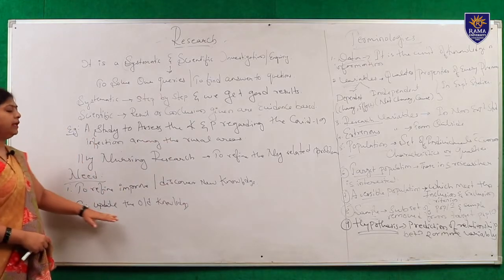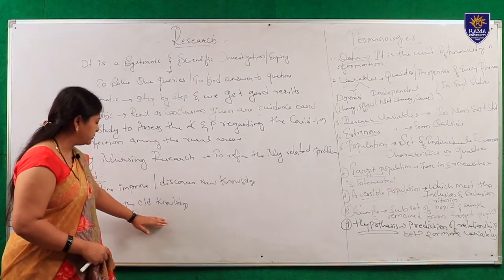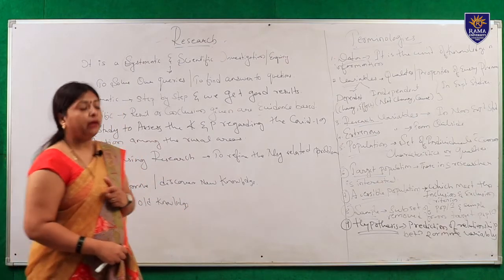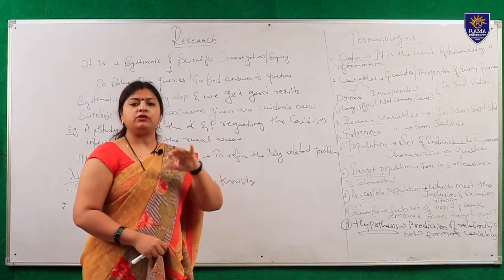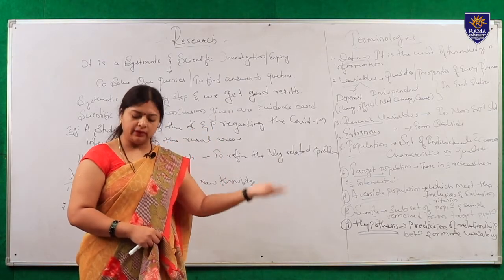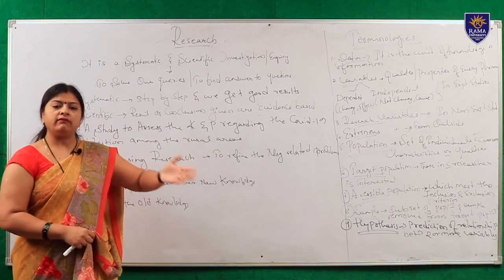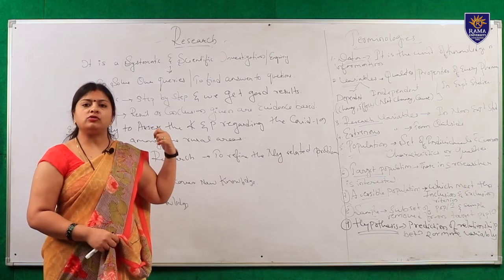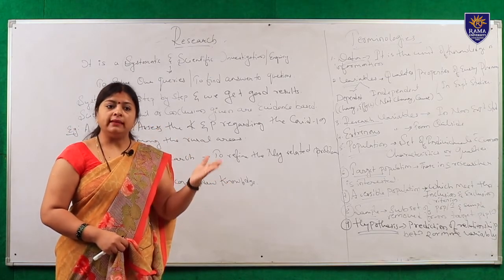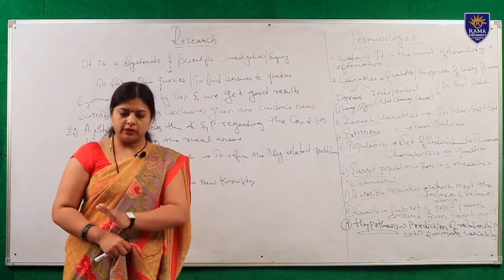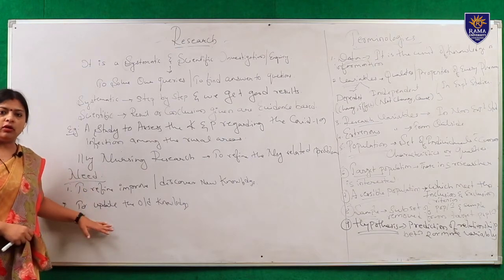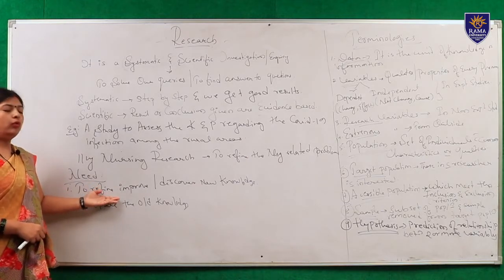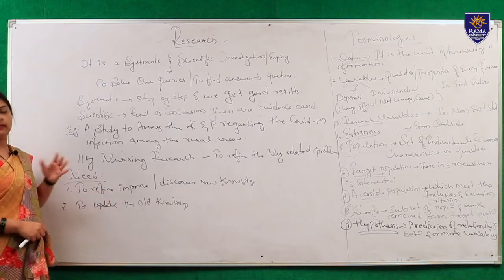The second need is to update old knowledge. Take the example of rights of patients. Before, the rights of the patient were only 5; now they have become 10. Similarly, practices of hand washing - in olden days there were no new technologies, then slowly we started to develop technologies and replaced old practices. The existing knowledge was updated to new knowledge. For that purpose we can use nursing research, and to find out new things, new inventions can also be done through nursing research.